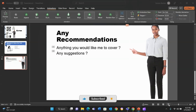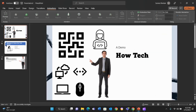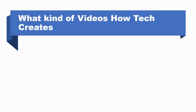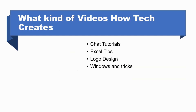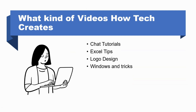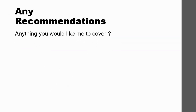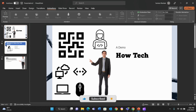Now I'll do the full presentation to show how it looks. Starting from the first slide — clicking through: 'What kind of videos?' then ChatGPT tutorial, Excel tips, logo design, Windows tips and tricks, then the person appears. You can have the person appear before or alongside the other elements. Then moving to recommendations, any suggestions, and there's the person in the corner. That's it for this video! If you liked it, please hit the Like button, subscribe if you haven't already, and I'll see you in the next video.